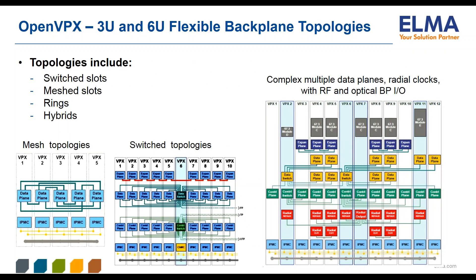Here are some examples of the different possible backplane topologies shown in representative developmental backplanes. In actuality, most companies will use backplanes customized for their specific application. On the left is an example of a fully meshed topology in which every slot is connected to every other slot with a fat pipe. In the middle, you see a switched topology example, which uses a switch to make the connection between one payload slot to the other. On the right is one of the more complex backplane topologies, developed by the VITA-84 standards group, referred to as the CMOS architecture.